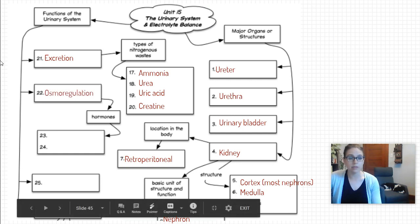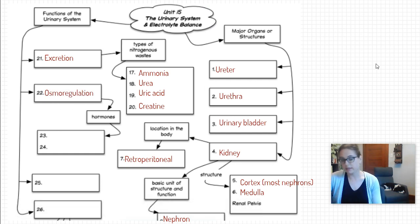The other thing that it does for us is osmoregulation, meaning regulating our water content in our body. So if we have too much water we urinate out more and your urine will be more diluted. If you haven't had a lot of water to drink your body's going to conserve water and so you'll urinate less water out.